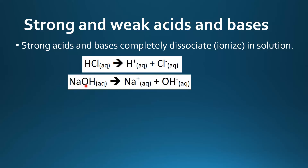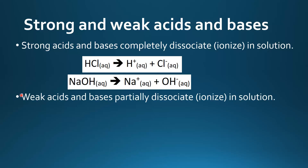Next we have a strong base: this is sodium hydroxide, and sodium hydroxide dissociates into Na+ and OH- or hydroxide ions. If we have 1 mole of NaOH it'll dissociate into 1 mole of sodium ions and 1 mole of hydroxide ions.